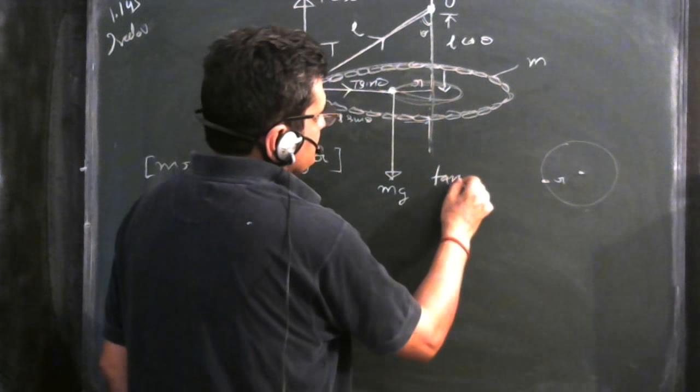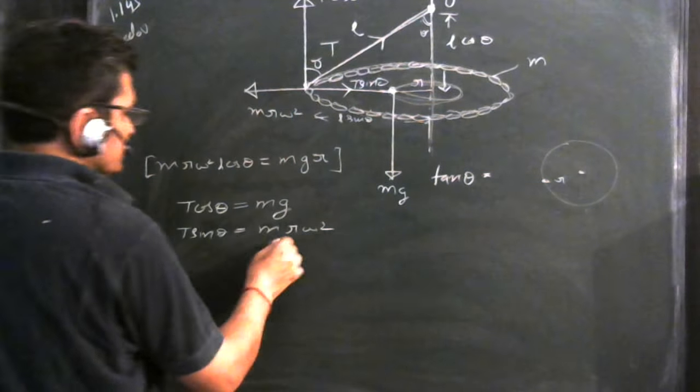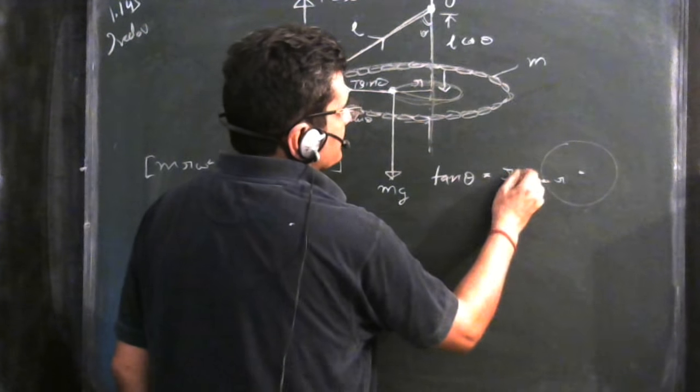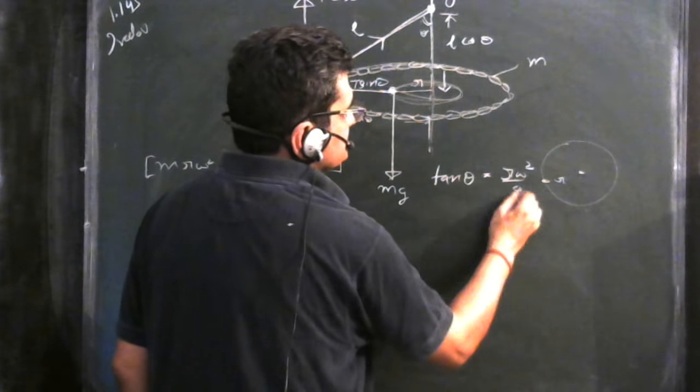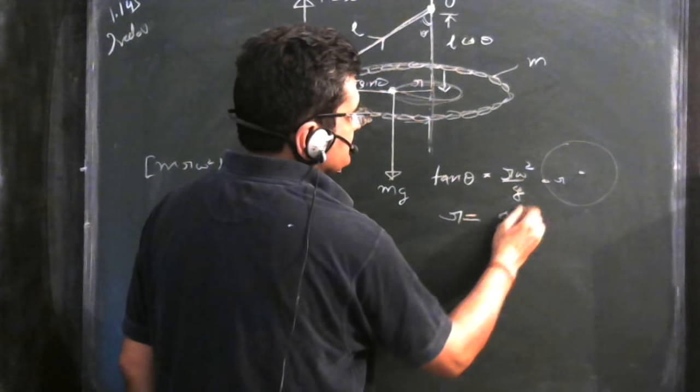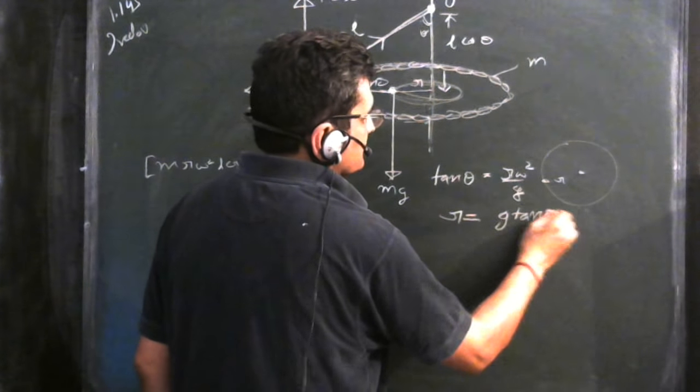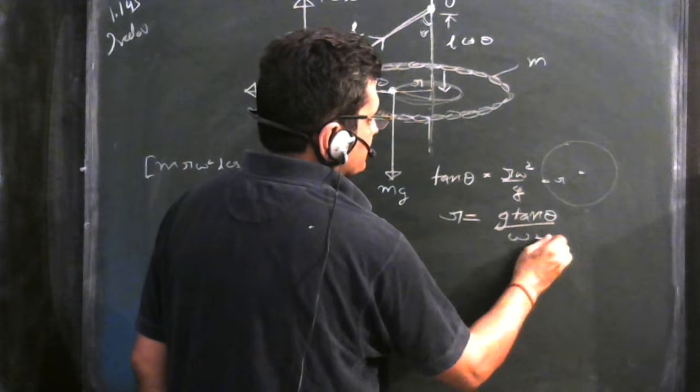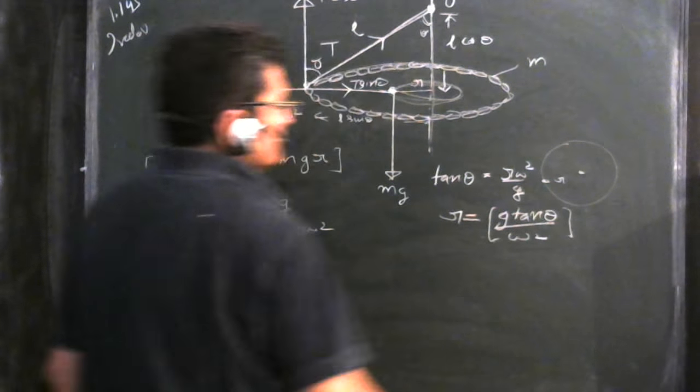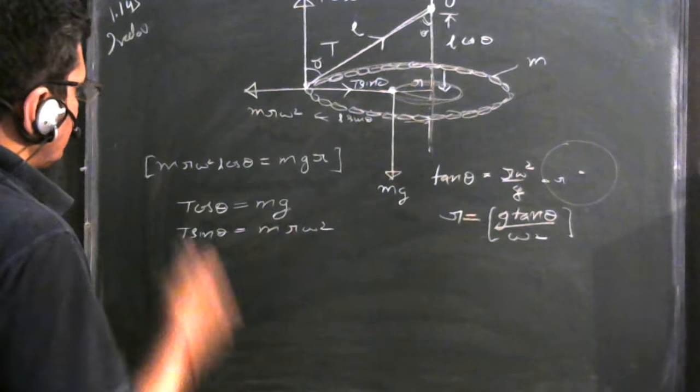You get tan theta equals R omega square upon G. By this, we get R equals G tan theta upon omega square. This is the value of R.